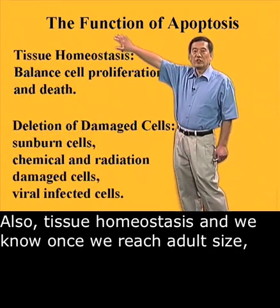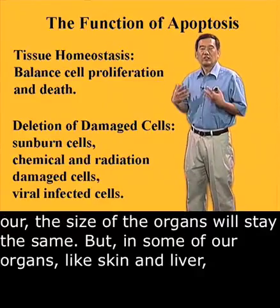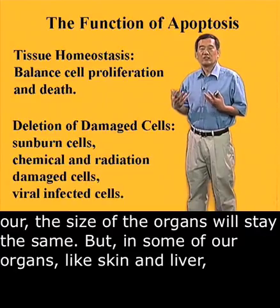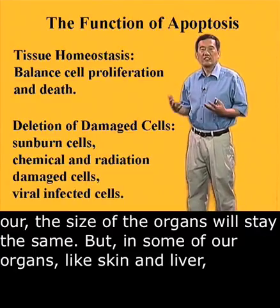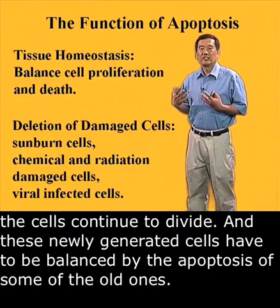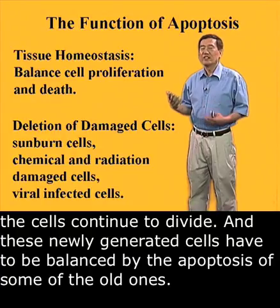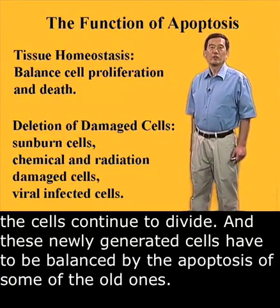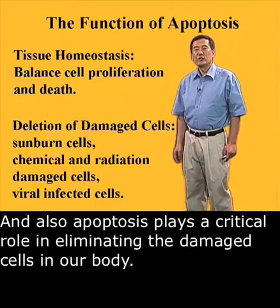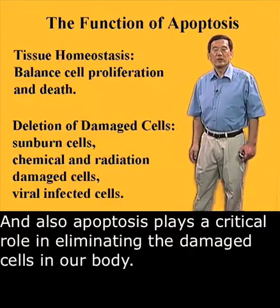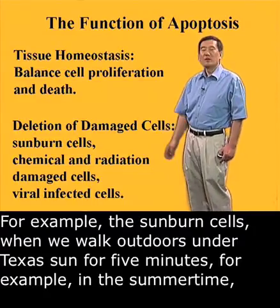Also, tissue homeostasis: once we reach adult size, the size of our organs stays the same. But in some organs, like skin and liver, cells continue to divide, and these newly generated cells have to be balanced by the apoptosis of some of the old ones. Apoptosis also plays a critical role in eliminating damaged cells in our body — for example, sunburn cells.